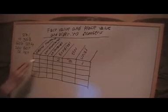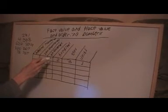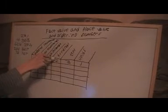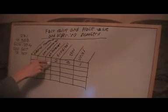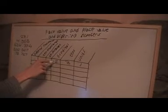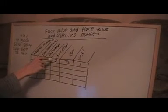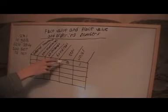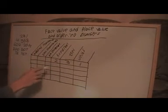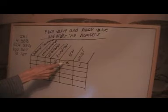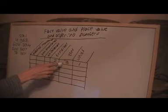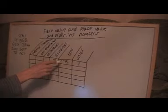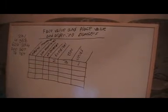Now, the place value of the two is hundreds, because that's what place it's in in the diagram, in the hundreds column, and the face value is two. So the face value is just a digit, and the place value is the column that it's in in the diagram. So three also has place value ten, and it has face value three.